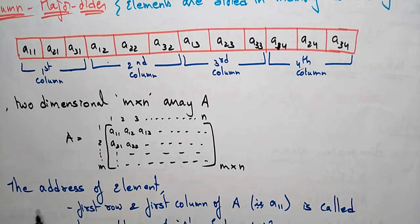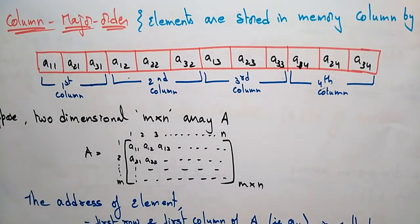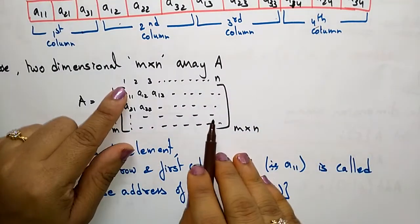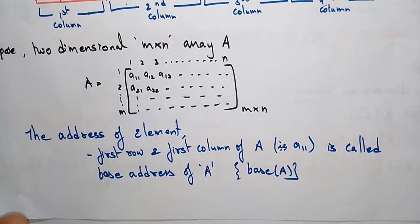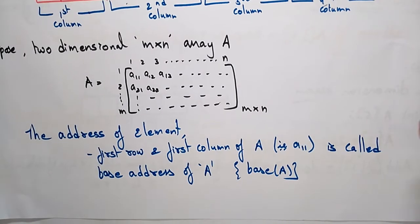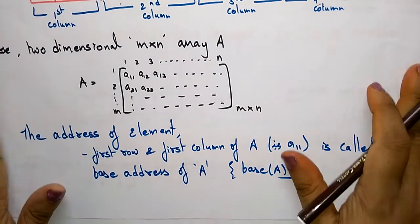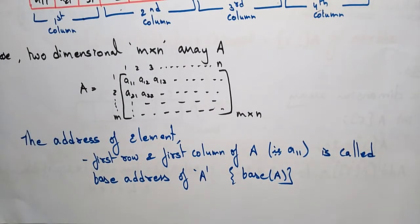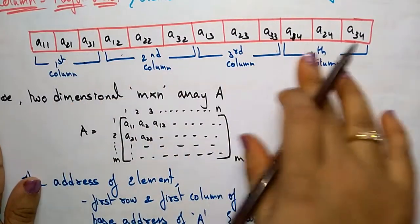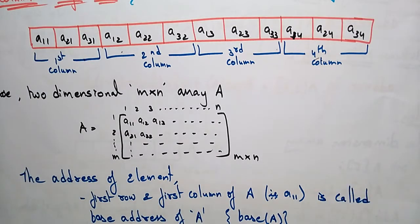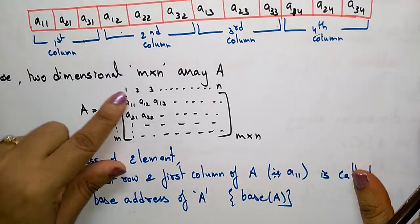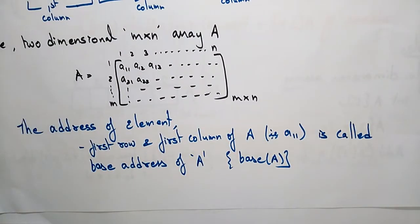To summarize: in row major order the elements are stored in memory row by row, whereas in column major order the elements are stored in memory column by column. Now suppose a two dimensional array is of size m by n. In the previous example I used three rows and four columns, but if your matrix size is unknown — an m by n matrix — then you need to follow a formula.